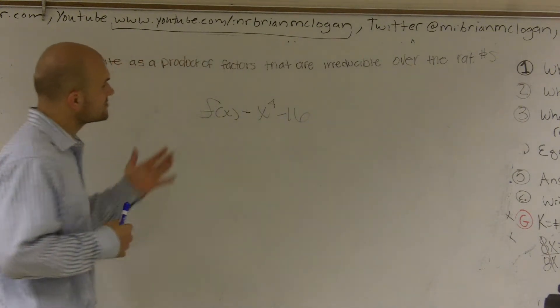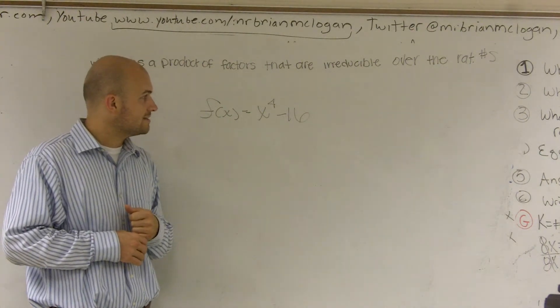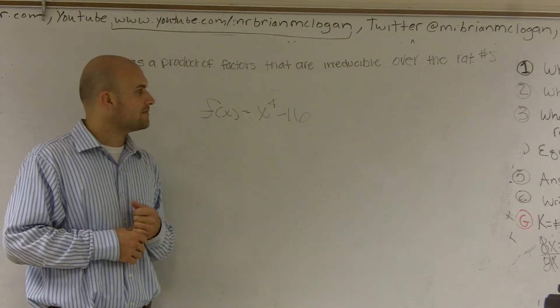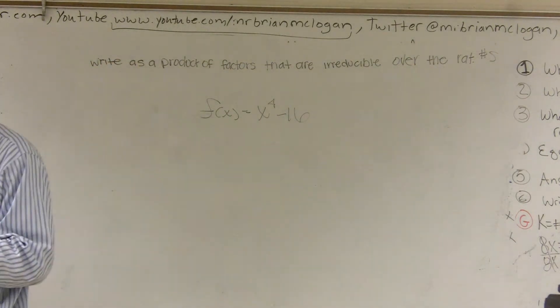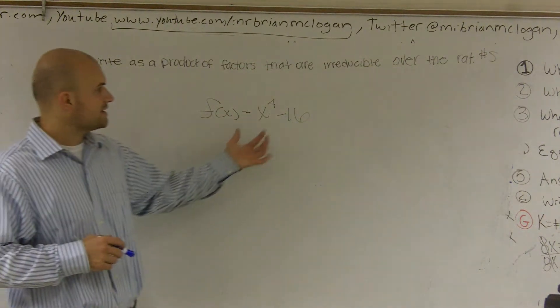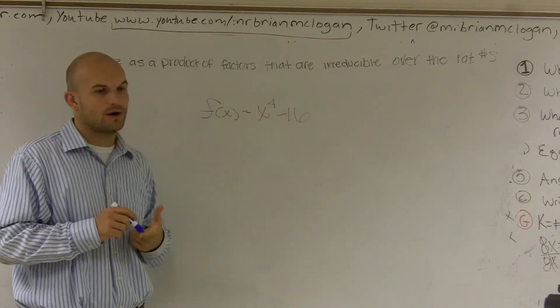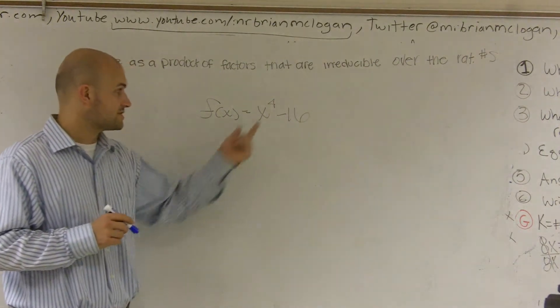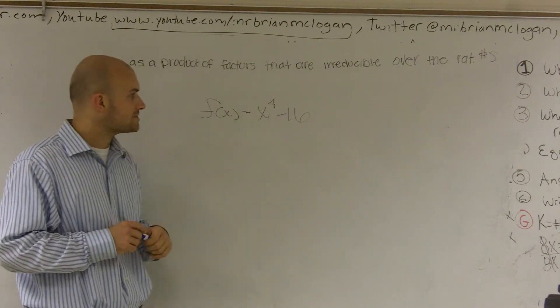So first of all, we need to see if we can refactor this. And the best thing I would look at is whenever you're given two terms, one thing you always want to look at is see if you can factor something out between them, which here we can't. This is x to the fourth and this is 16. So we can't factor anything out between them.